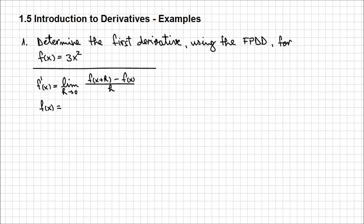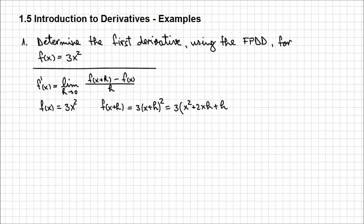That's what I'm going to do. So f of x is 3x squared. And f of x plus h is 3 times x plus h, squared. Evaluating that expression gives 3 times x squared plus 2xh plus h squared, which becomes 3x squared plus 6xh plus 3h squared.